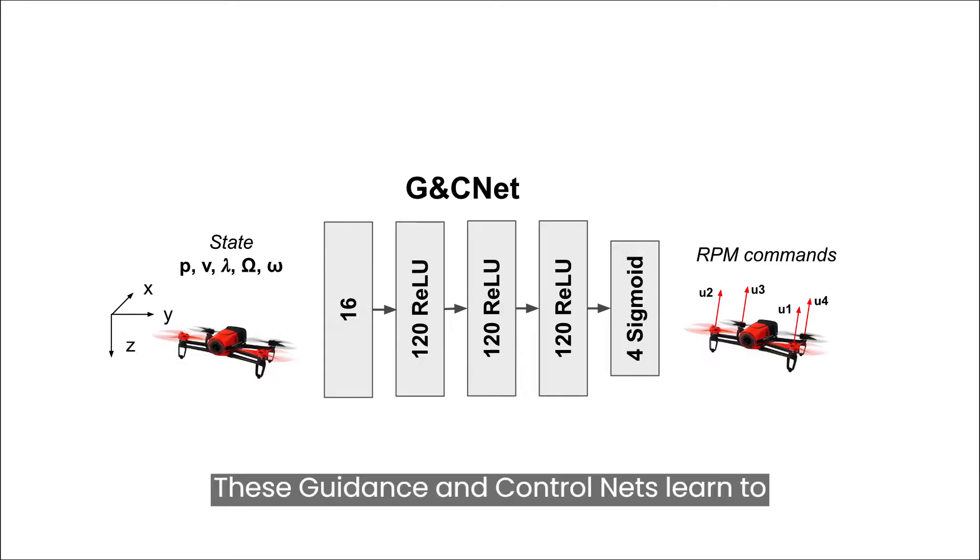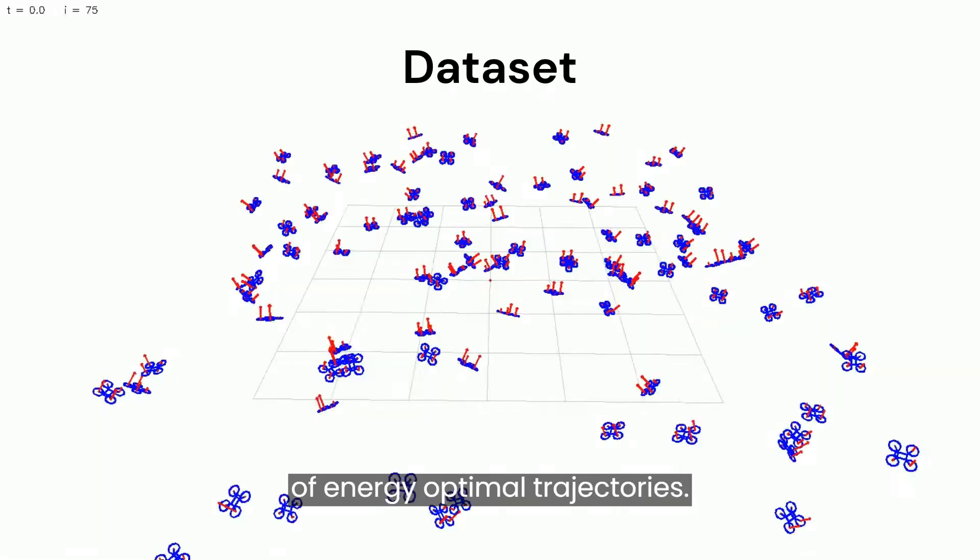These guidance and control nets learn to map the quadcopter's state to the optimal motor commands by imitating a data set of energy optimal trajectories.